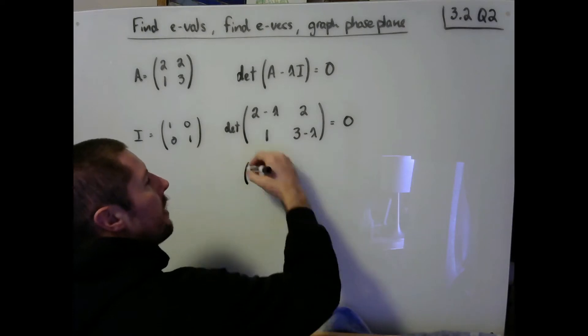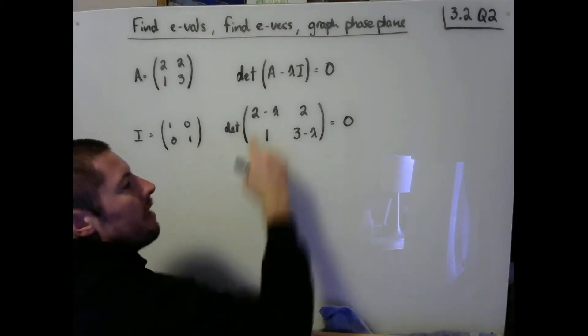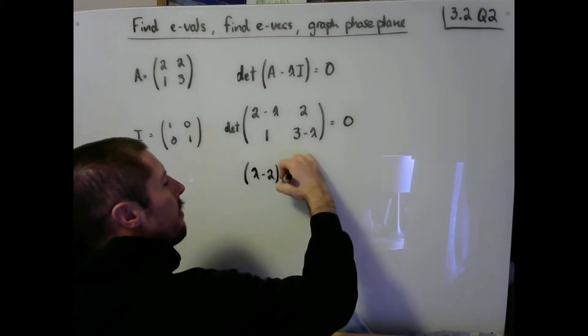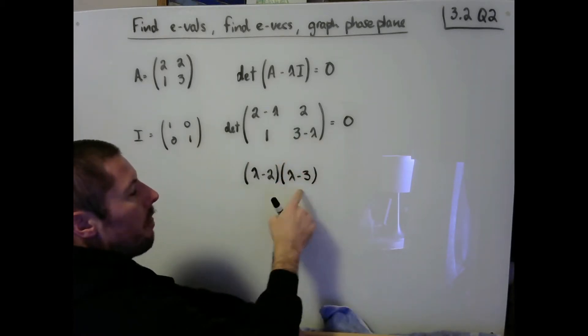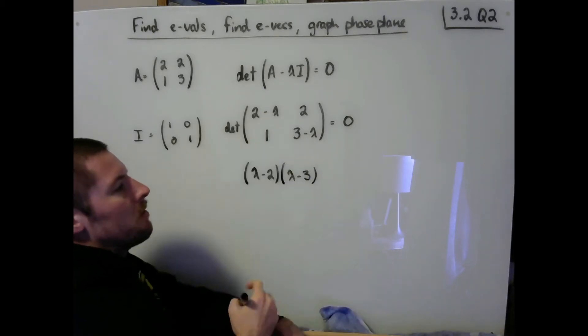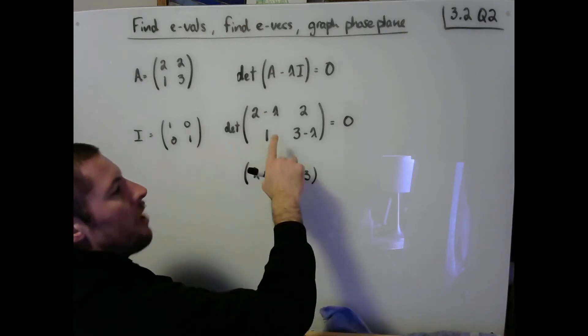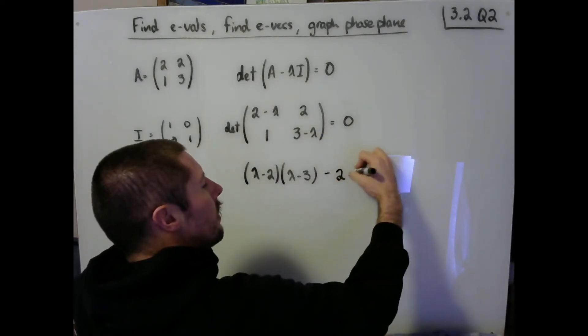then when I go to write my ad minus bc, our determinant format here, I can really write this as lambda minus 2, a negative has been factored out of this term, times lambda minus 3. Since I've factored a negative out of both, those negatives have both canceled out front. So this should be equivalent to the product of those two terms. We also want to subtract off the product of our off diagonal. So that's going to be a minus 2 equals 0.